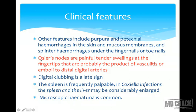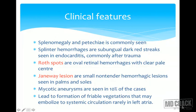Key MCQ points: Osler nodes are painful, tender swellings at the fingertips, probably a product of vasculitis or emboli to distal digital arteries. Digital clubbing is a late sign. The spleen is frequently palpable; in Coxiella infections the spleen and liver may be considerably enlarged. Microscopic hematuria is common. Splinter hemorrhages are subungual dark red streaks seen in endocarditis, commonly after trauma. Roth spots are oval retinal hemorrhages with a clear pale center.